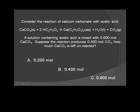Consider the reaction of calcium carbonate with acetic acid. A solution containing acetic acid is mixed with 0.600 moles of calcium carbonate. Suppose the reaction produces 0.400 moles of carbon dioxide. How much calcium carbonate is left unreacted? A, 0.200 moles, B, 0.400 moles, or C, 0.800 moles.